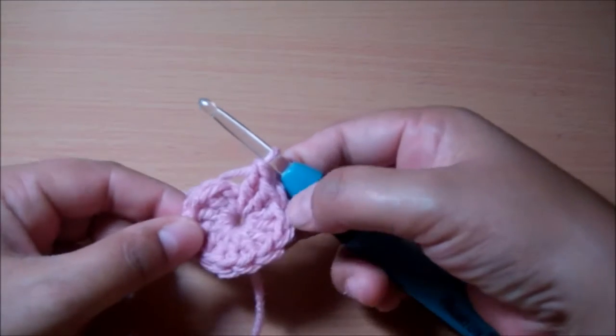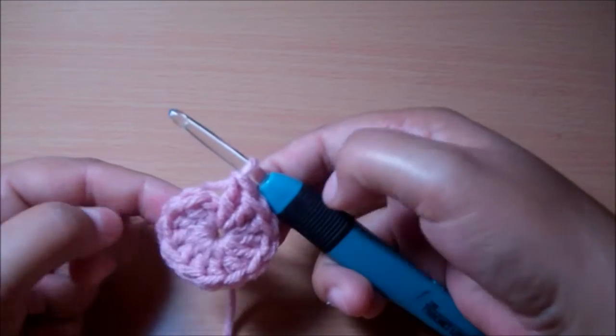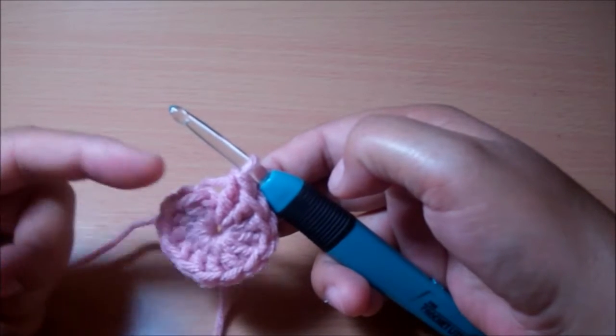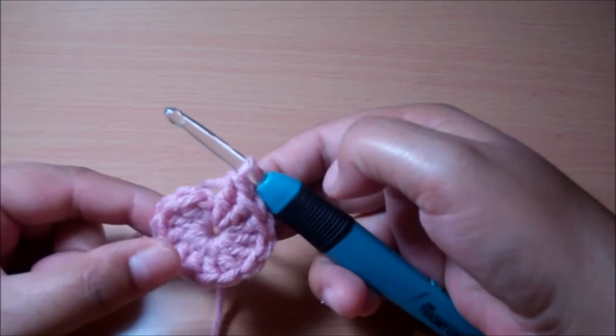And all you have to do is when you have completed your round, as I have here, I have 12 double crochets going around.